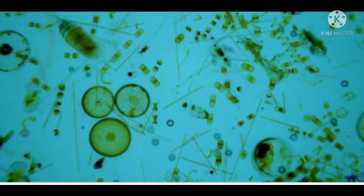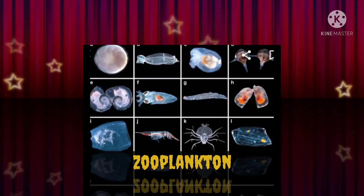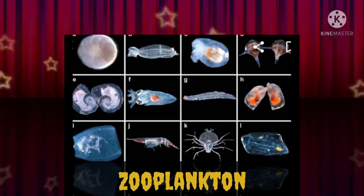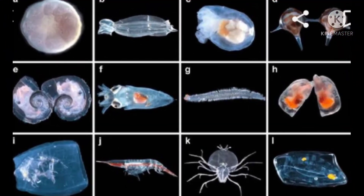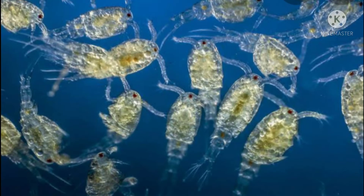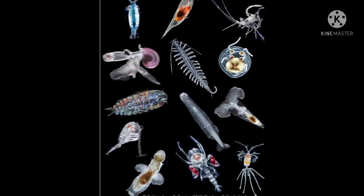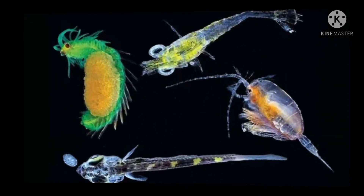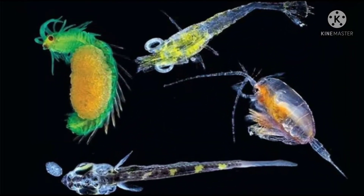Phytoplankton obtain their energy through photosynthesis, as do trees and other plants on land. This means phytoplankton must have light from the sun, so they live in the well-lit surface layers of oceans and lakes. Zooplankton are small aquatic microorganisms in the water column that include crustaceans, rotifers, open-water insects, larvae, and aquatic mites. The zooplankton community is composed of both primary consumers, which eat free-floating algae, and secondary consumers, which feed on other zooplankton.